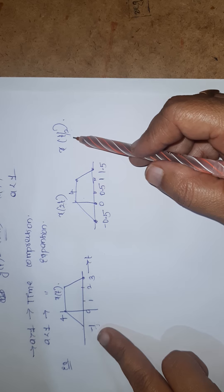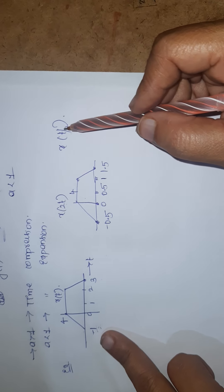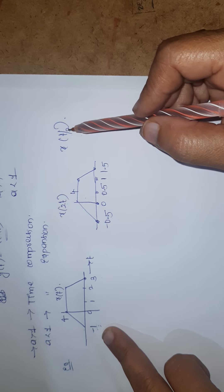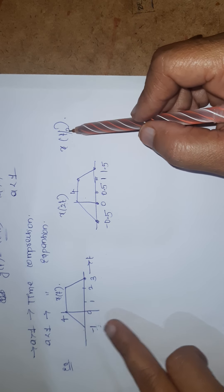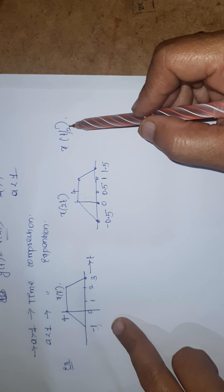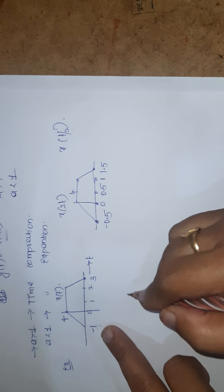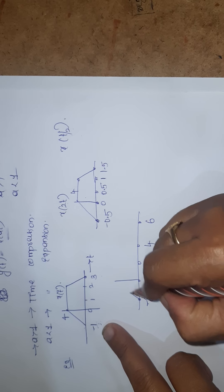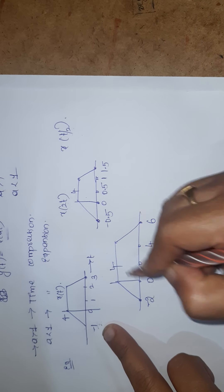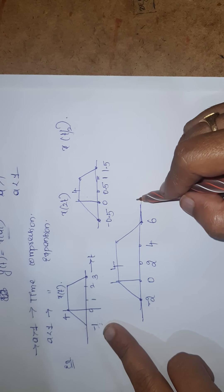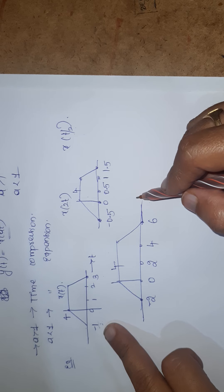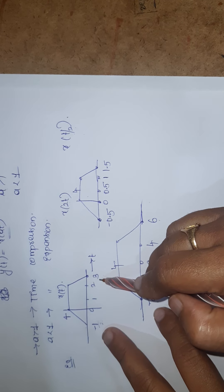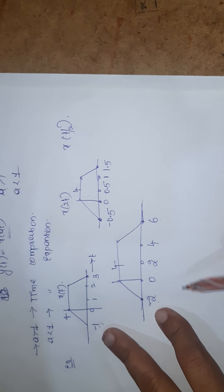Now for x(t/2): as already stated, if we have t/2, we do multiplication. We multiply every t value by the given factor, which is 2. So we get: minus 2, 0, 2, 4, 6. The magnitude will not change. So x(t/2) is called the expansion version because the signal now has limits from minus 2 to 6, whereas the given signal had limits from minus 1 to 3 only — it is expanded.